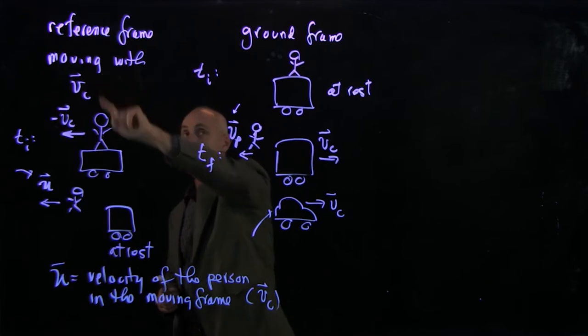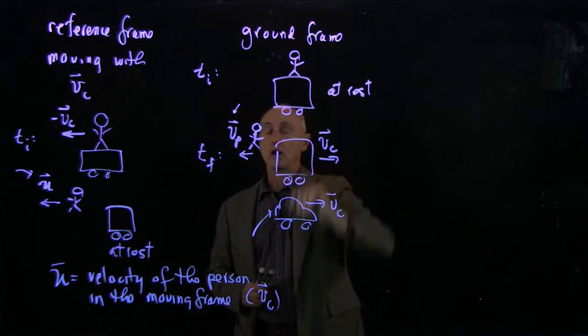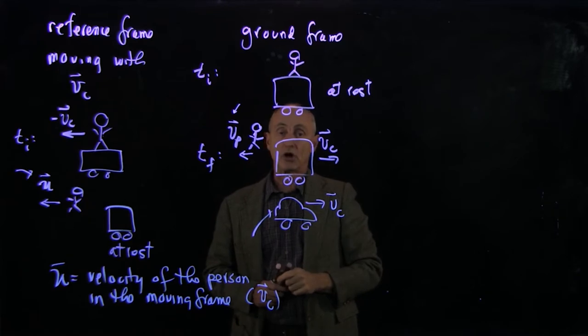These were pictures in the reference frame moving with vc, and these are the pictures, momentum diagrams, of the person and the cart in the ground frame.